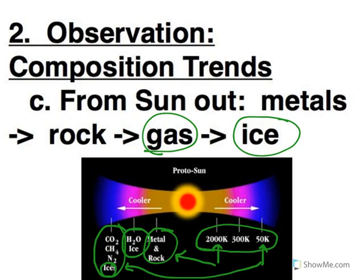So ice doesn't necessarily mean water ice. It can be a solid form of a lot of different things. And those are found in those colder temperatures. So the temperature gradient that is produced by our sun dictates what the planets are going to be made out of.